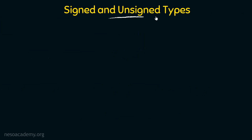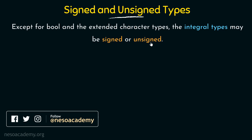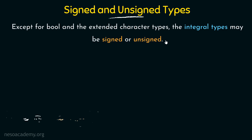Talking about signed and unsigned types: except for the boolean and the extended character types, the integral types may be signed or unsigned. We have studied the various types in C++ — we have the integral types, the boolean data types, and the character types. Apart from the boolean and extended character types, the integral types can either be signed or unsigned.